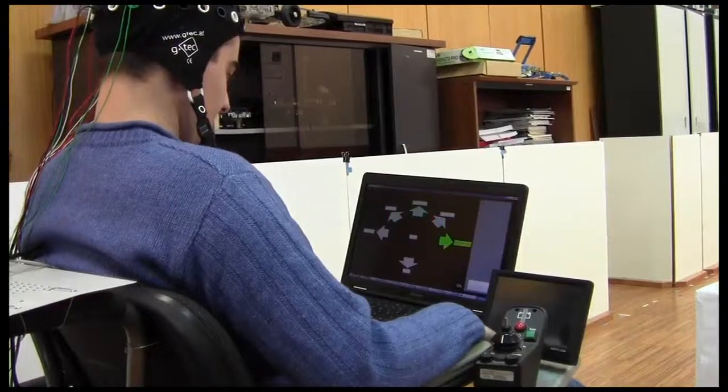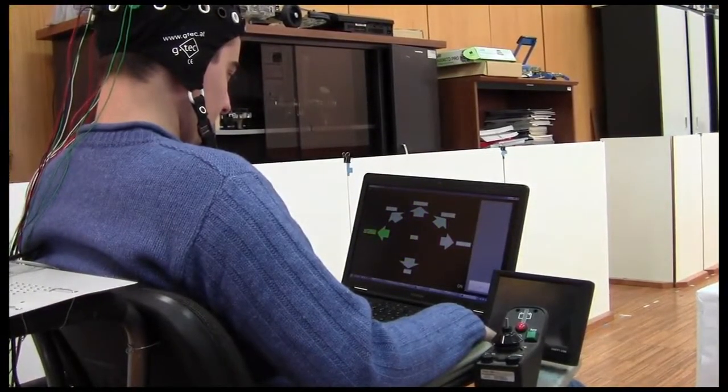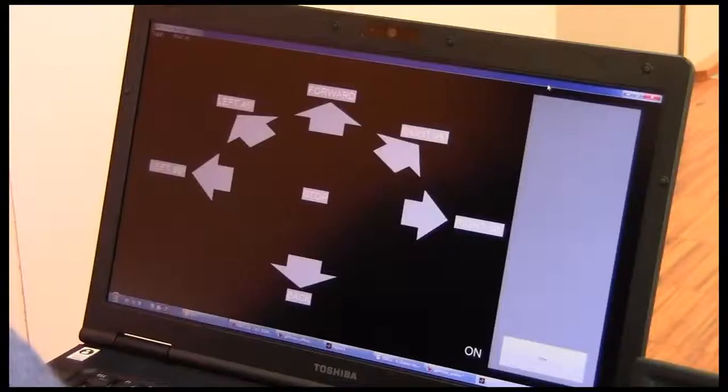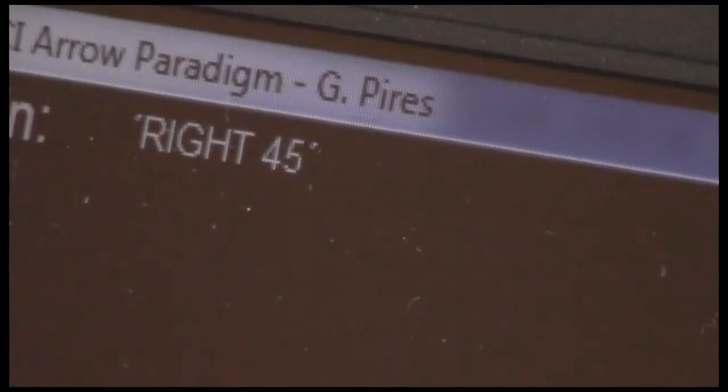Before the online operation, the system is calibrated to fit the classification models to the user. The calibration takes less than 3 minutes. The user is requested to count 9 repetitions of each symbol flash corresponding to the command that appears in the upper left corner of the screen.